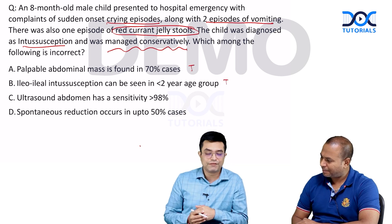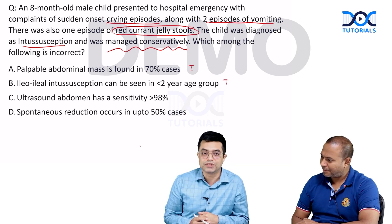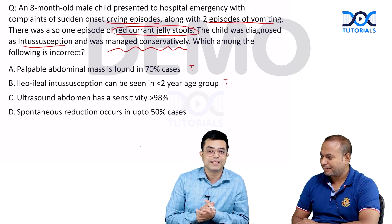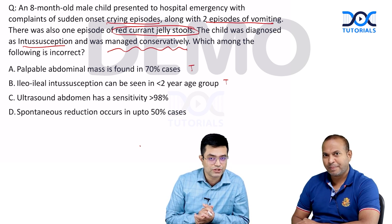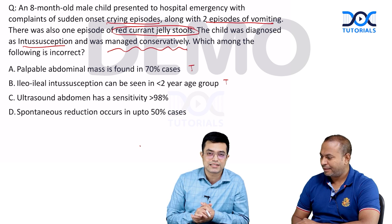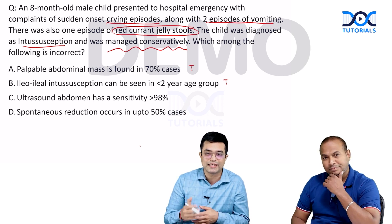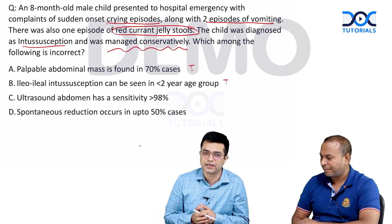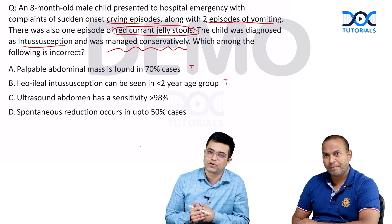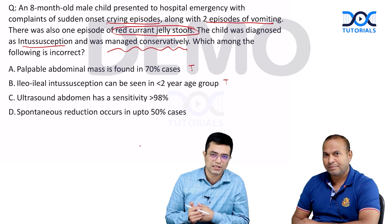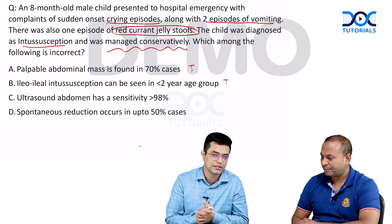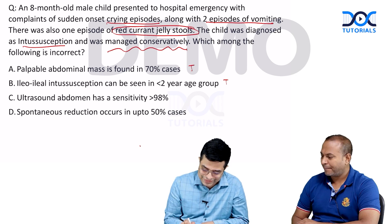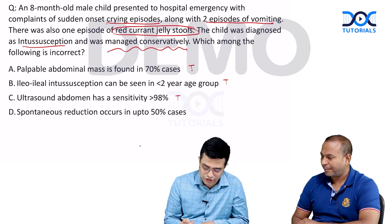Option C: ultrasound abdomen has a sensitivity of more than 98%. This is a true statement. Ultrasound abdomen is the investigation of choice for these patients, with a sensitivity between 90% to 100% and specificity of almost 98%. If there is doubt, you can always go for a contrast enema, but usually ultrasound abdomen along with the clinical picture is good enough to make the diagnosis. So option C is also true.